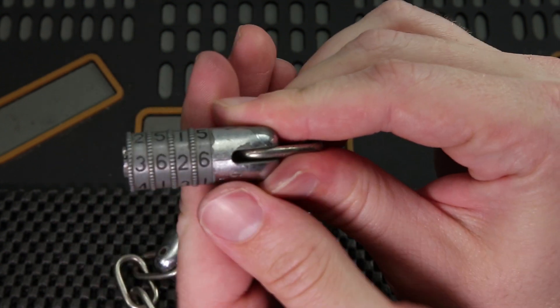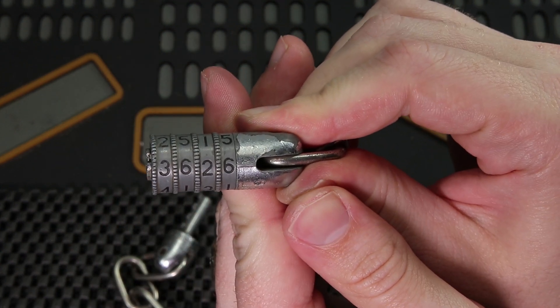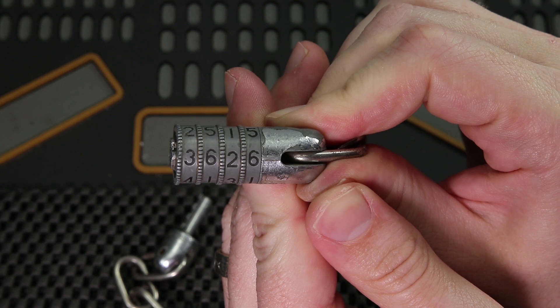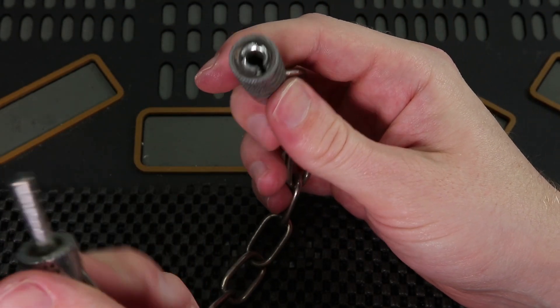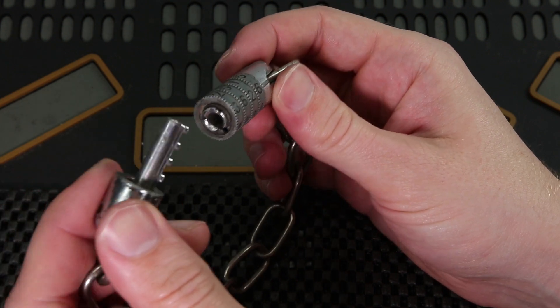So either way, this was a pretty cool little lock to decode. The combination was three, six, two, six. This is a little lock I found at my parents' house and they didn't have the combo too, so I said I could give it a go.